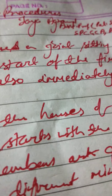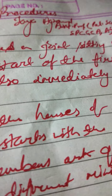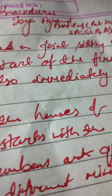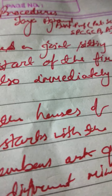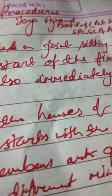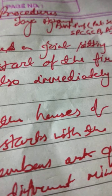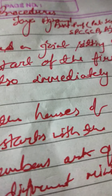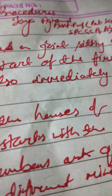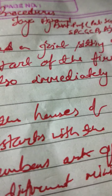When the bill comes up for consideration it is discussed clause by clause and amendments may be suggested by members — this is called the second reading. Finally, when the member moves that the bill be passed, it is put to vote. If passed, it goes to the other house, and if passed there also after discussion, it is sent to the president for his assent.